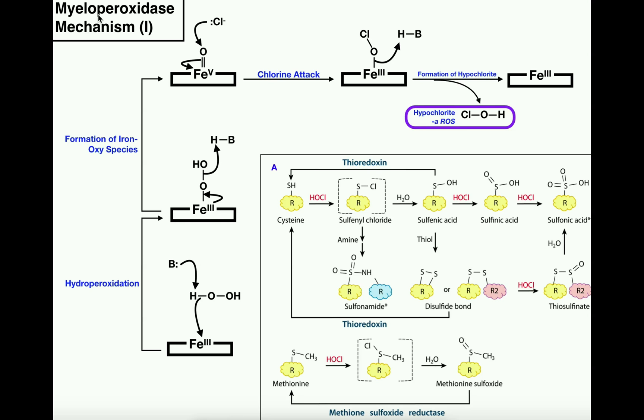Myeloperoxidase is expressed by neutrophils, granulocytes. What do neutrophils do? Neutrophils are sadistic cells. They go and find invading pathogens such as bacteria and they ultimately induce respiratory burst.